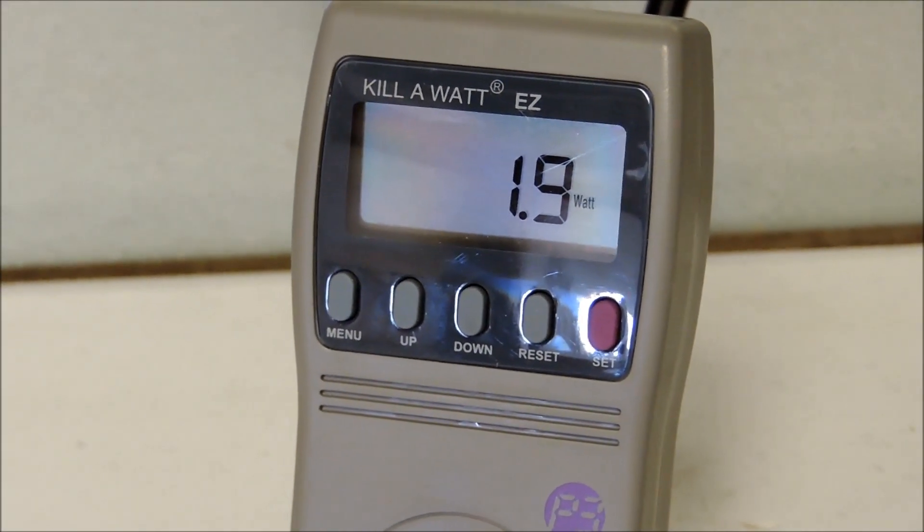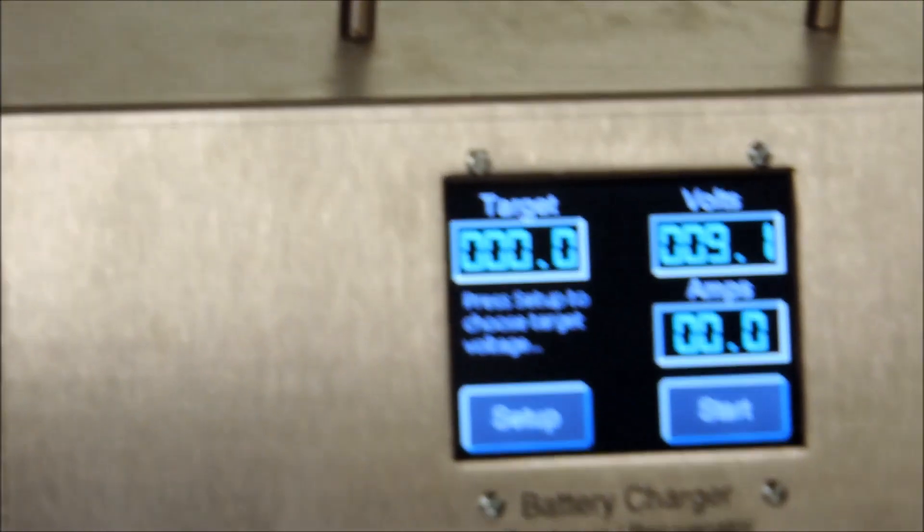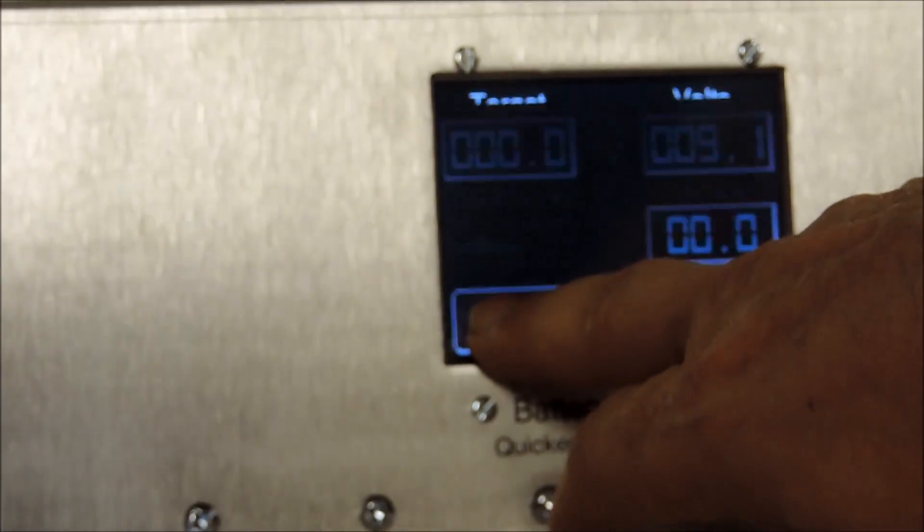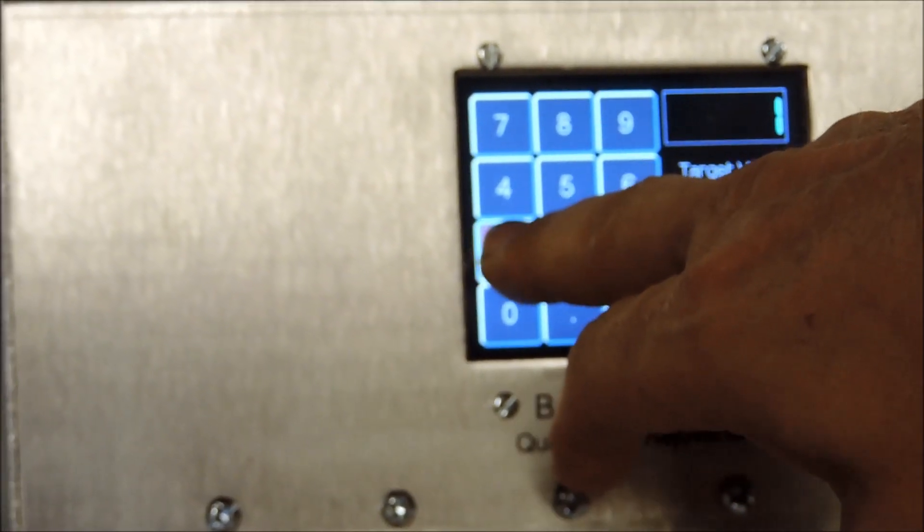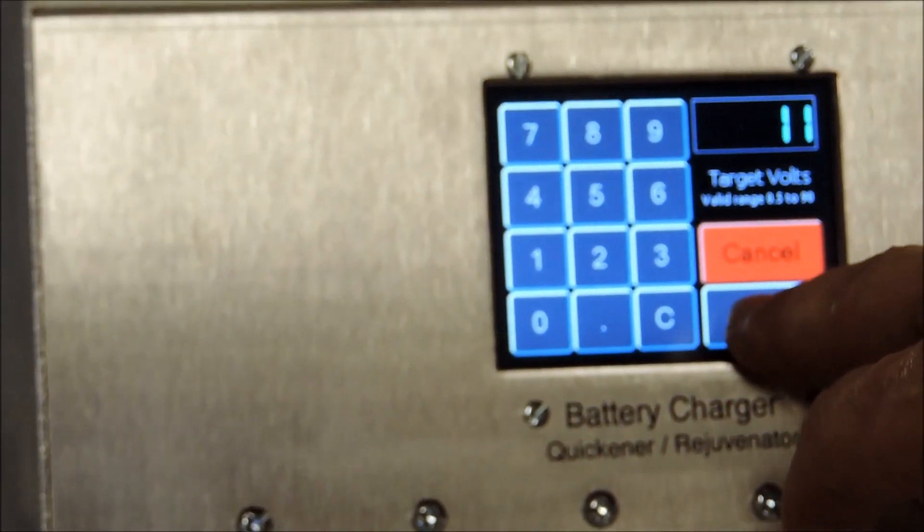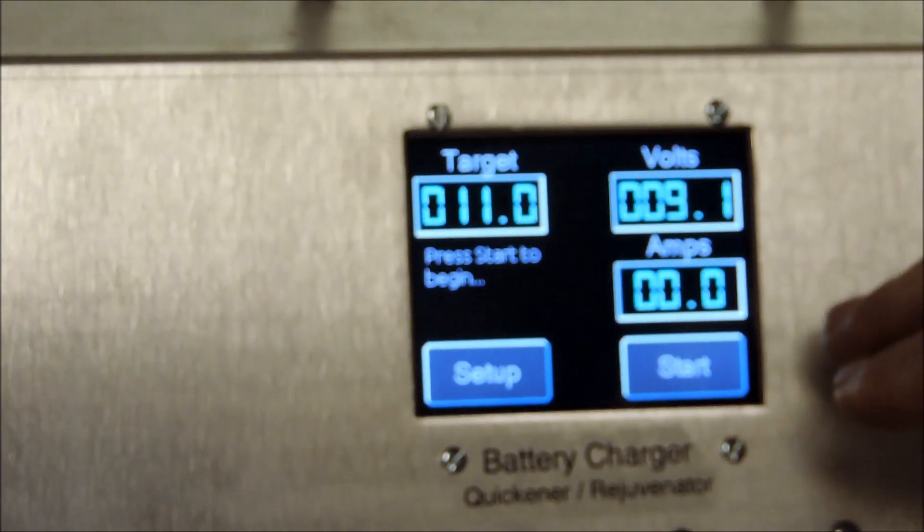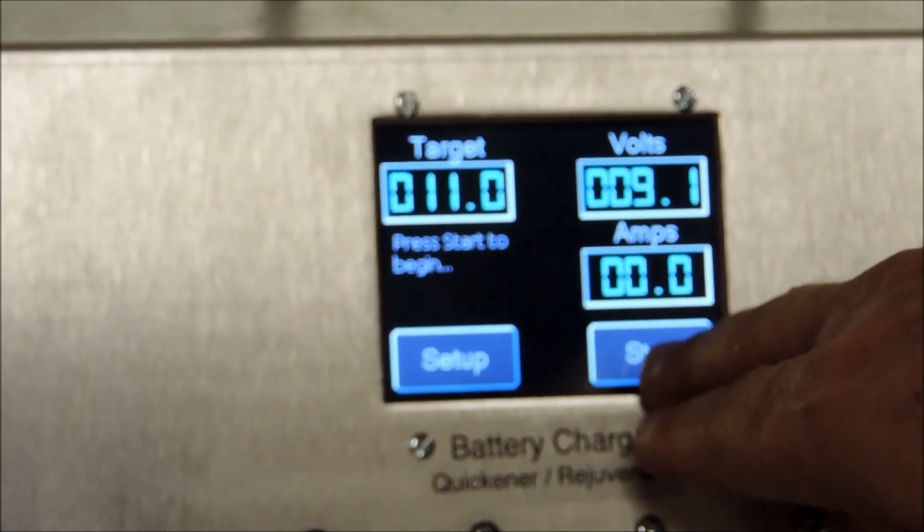So we will program in the target voltage, which, a 9 volt battery, if you want to charge it up, it should be about 11 volts. So you hit setup, 11 volts. And it says 11 volts on the target, 9 volts, 9.1 is where it's at now. And then we hit start.